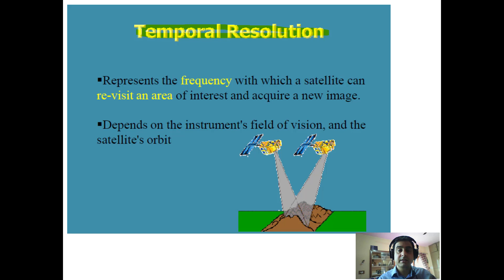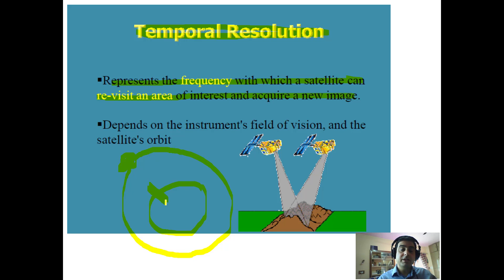Temporal resolution represents the frequency with which a satellite can revisit an area of interest and acquire a new image. As a satellite revolves around the Earth, the time it takes to return to the same location — whether five days, 24 days, or 30 days — defines its temporal resolution.